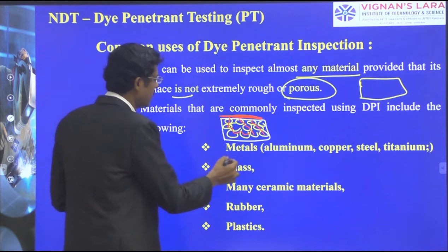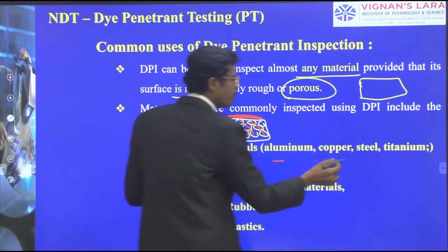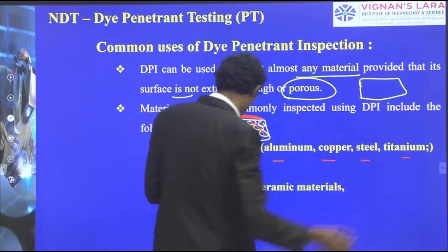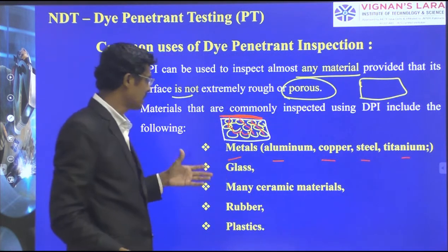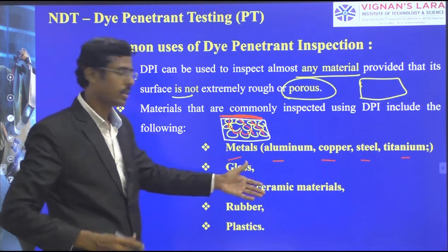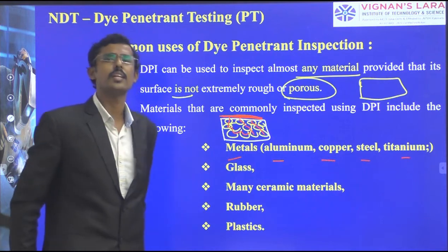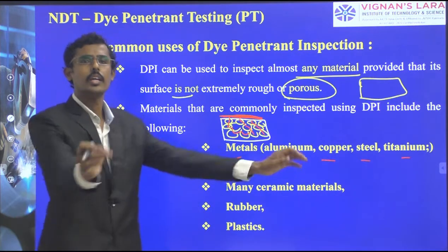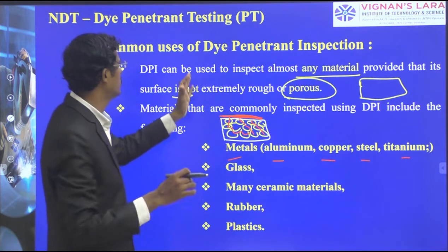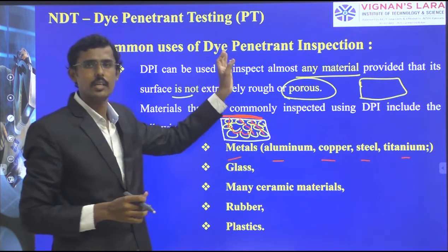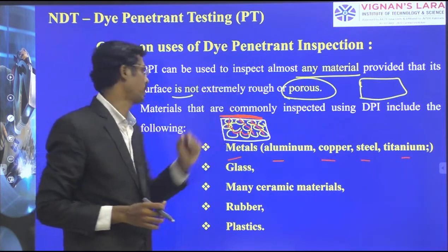Other than porous materials, any material — aluminum, copper, steel, titanium, glass, ceramic, rubber, or plastics — can be inspected through di-penetrant inspection.